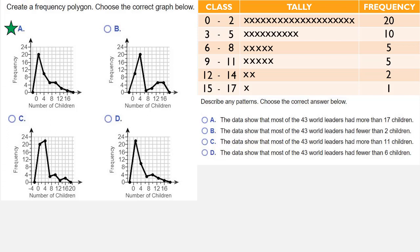Does the data show that most of the 43 world leaders had fewer than 2 children? Well, fewer than 2 children would be our first class, which would have 20 in it. And 20 is not most of 43, so choice B is not the answer.